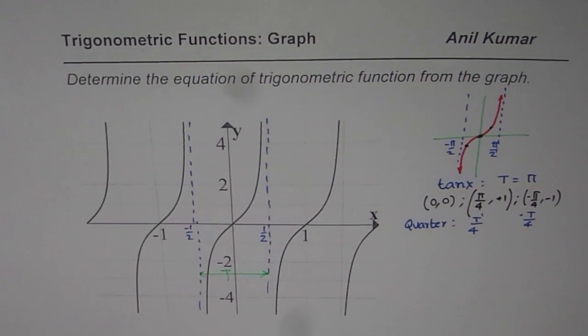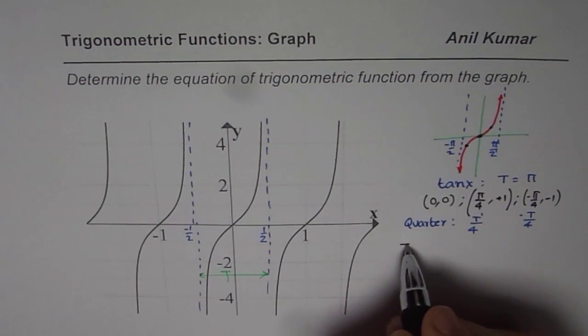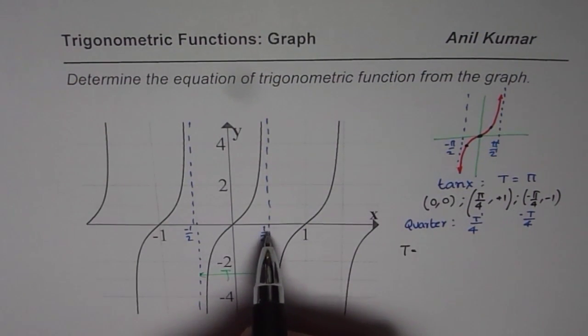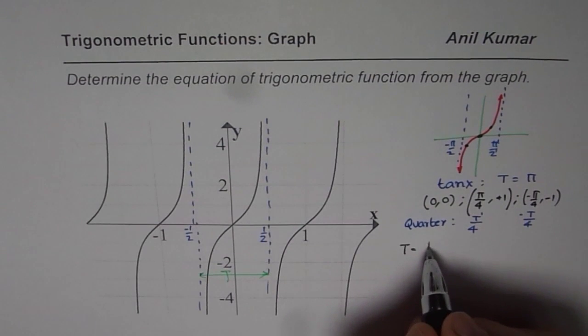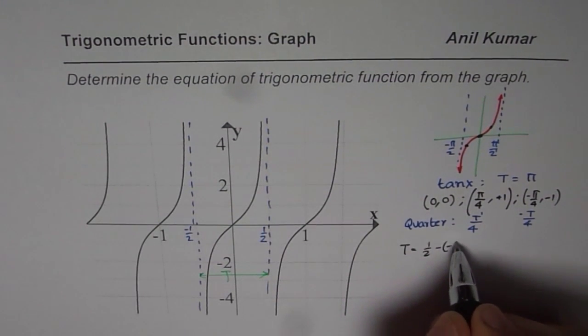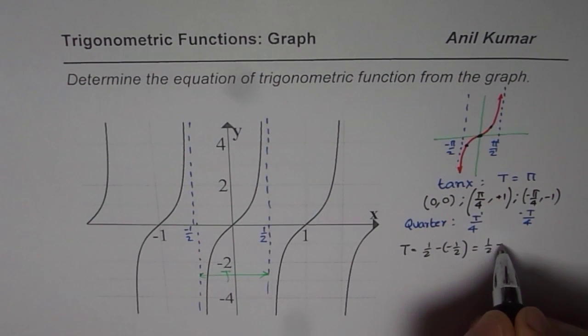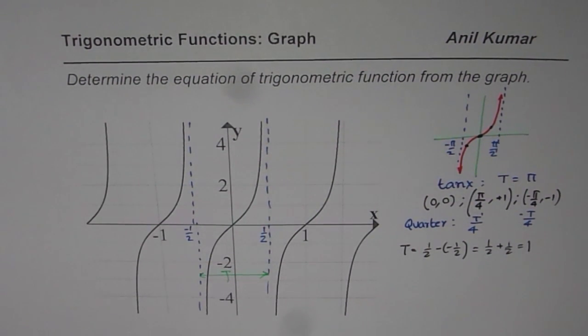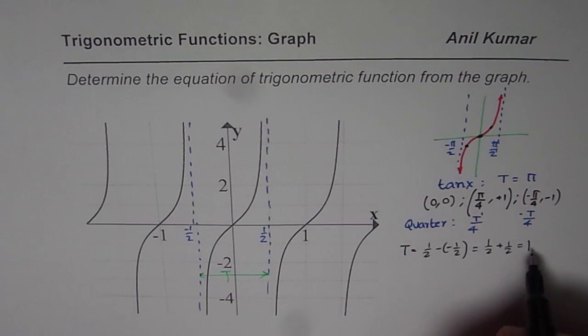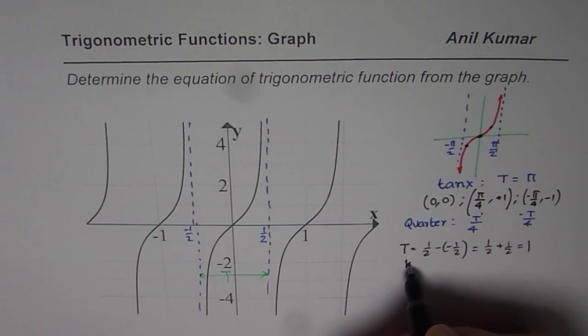That is the time period for us. Let me sketch - this is the time period. Now how much is that? Let us calculate. Time period for us is from 1/2 minus of minus 1/2. So the time period is 1/2 plus 1/2 which is 1. So t is 1 for us.